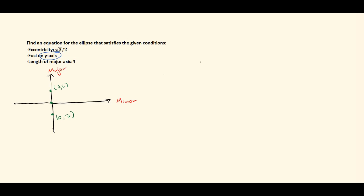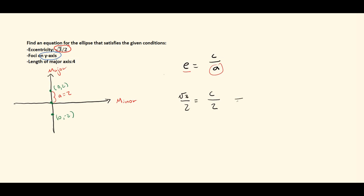Now we use the eccentricity equation: E equals c over a. We're given that the eccentricity is the square root of three over two, and we found that a equals two. So we plug in and solve for c: the square root of three over two equals c over two. Multiplying both sides by two gives us c equals the square root of three.